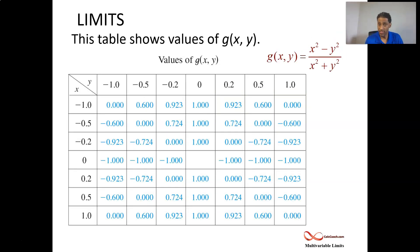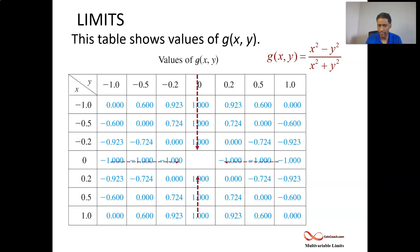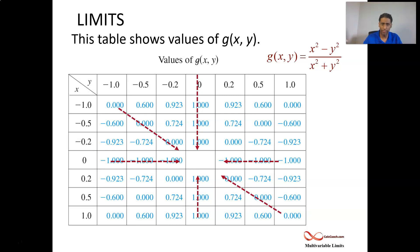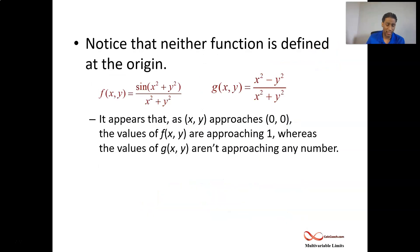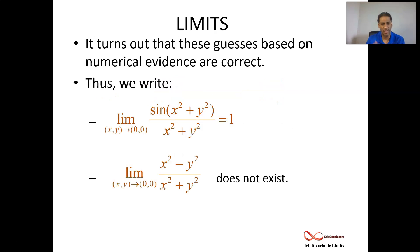The other function g is very different. If you approach along the x-axis where y equals 0, it looks like it's going to 1. If you approach along the y-axis where x equals 0, it looks like it's approaching negative 1. Approaching along y equals x, you head towards 0, and y equals negative x also gives 0. There's wild disagreement about what's happening as you approach the origin. So the first function has a limit of 1, while the second function has a limit that doesn't exist.